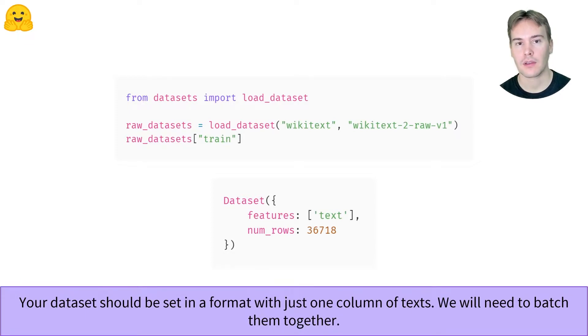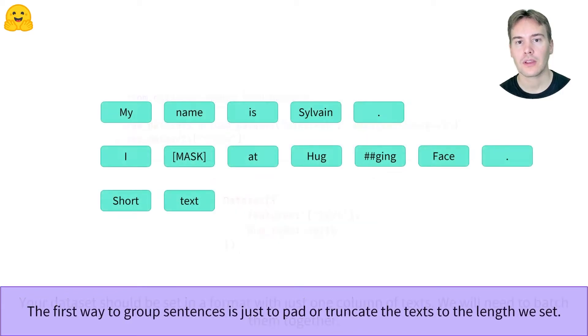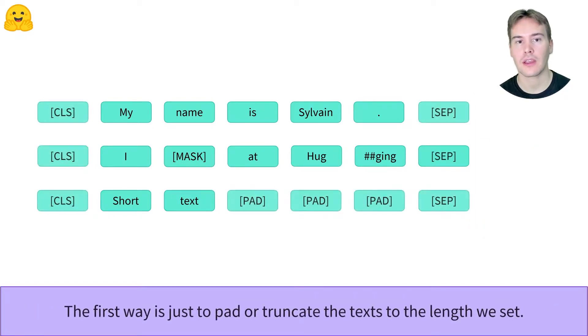Before we start randomly masking things, we'll need to somehow make all those texts the same lengths to batch them together. The first way to make all the texts the same lengths is the one we use in text classification. Let's pad the short texts and truncate the long ones.